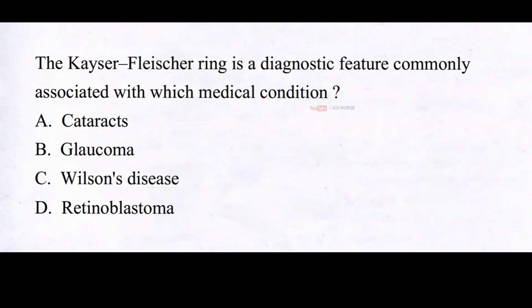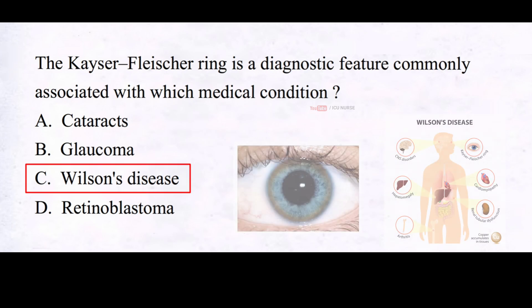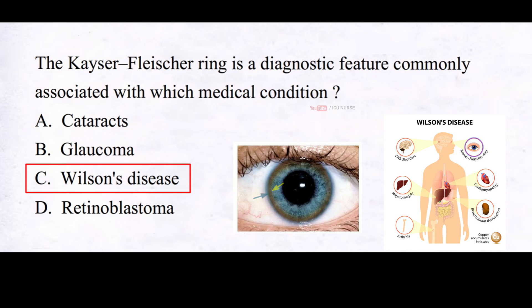The Kayser-Fleischer ring is a diagnostic feature commonly associated with Wilson's disease. It is a copper build-up in the cornea appearing as a golden or greenish-brown ring near the edge of the iris. This ring results from excess copper deposited in the eye's tissues due to the metabolic disorder. Regular monitoring and treatment are important for managing this rare genetic disorder effectively.